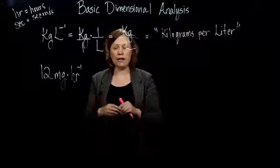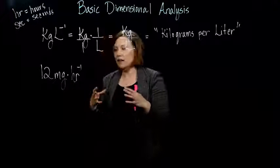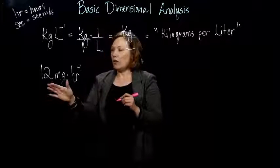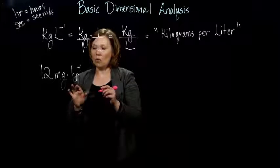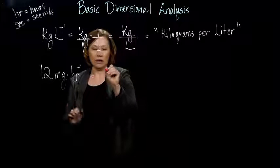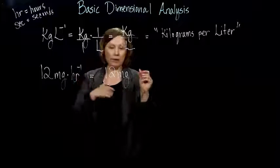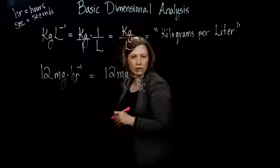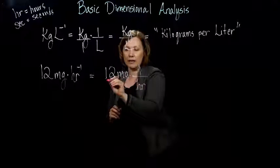So treating these units in a sort of mathematical way. Alright, so I've got 12 mg times hour to the negative 1. So again, I'm going to rewrite the hour to the negative 1 as 1 over hours. And remember, it's times, and I'm multiplying here.